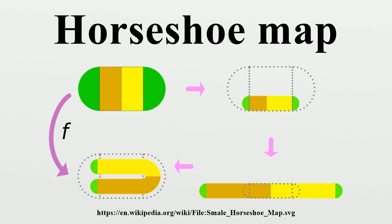For a horseshoe map, there are an infinite number of periodic orbits. Periodic orbits of arbitrarily long period exist. The number of periodic orbits grows exponentially with the period, and close to any point of the fractal invariant set there is a point of a periodic orbit.